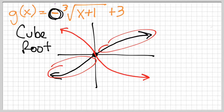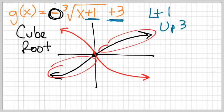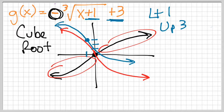Now I apply the shift. I see a plus 1 with the x, so that means I go to the left 1. And I see a plus 3 on the outside, so that means I move up 3. So to the left 1, up 3 — I'll be right here, starting up and snaking down. I don't need an exact graph, just a rough sketch. The negative reflects the graph over the x-axis.